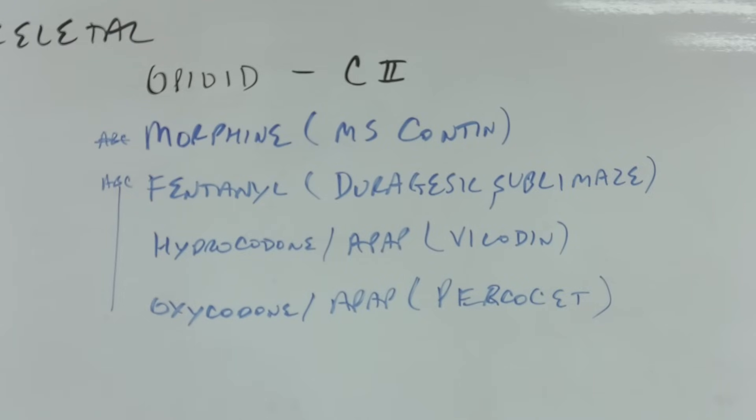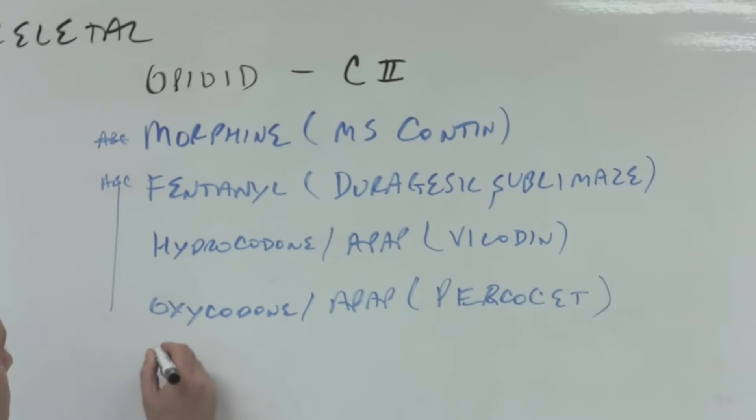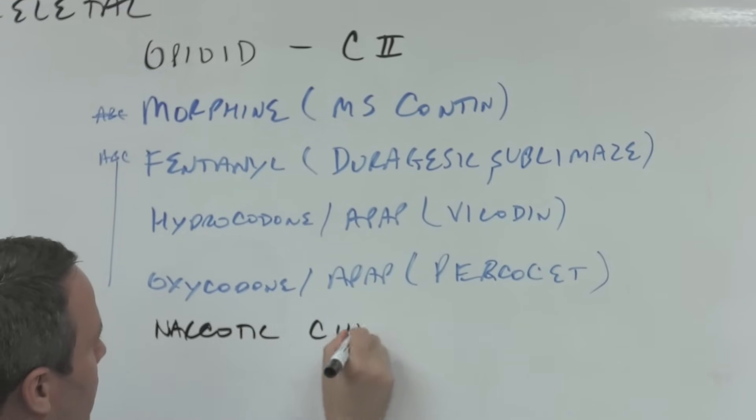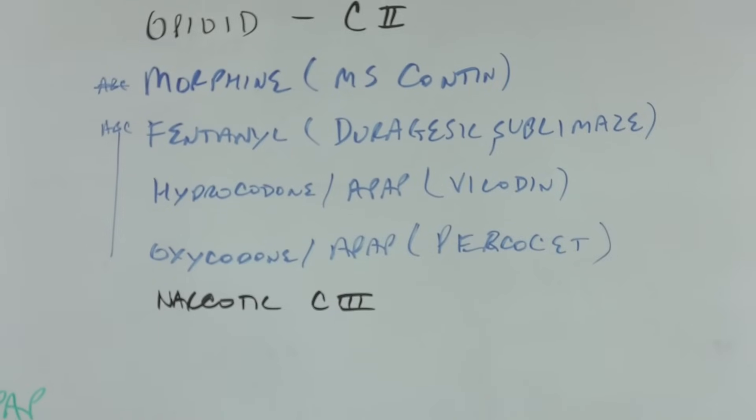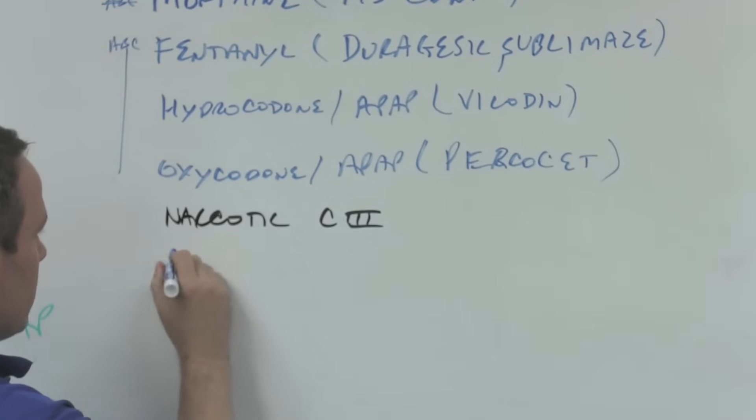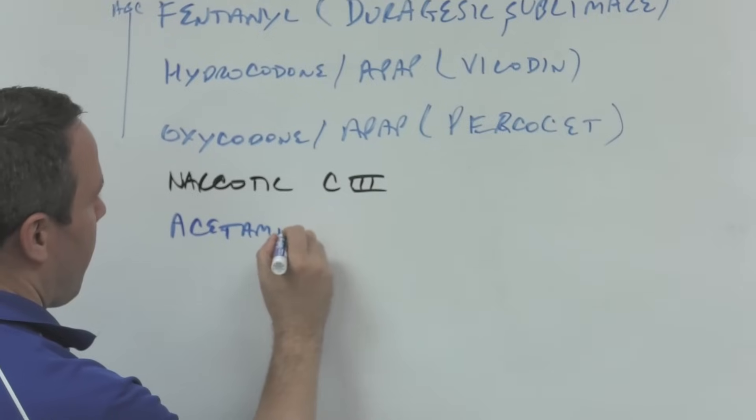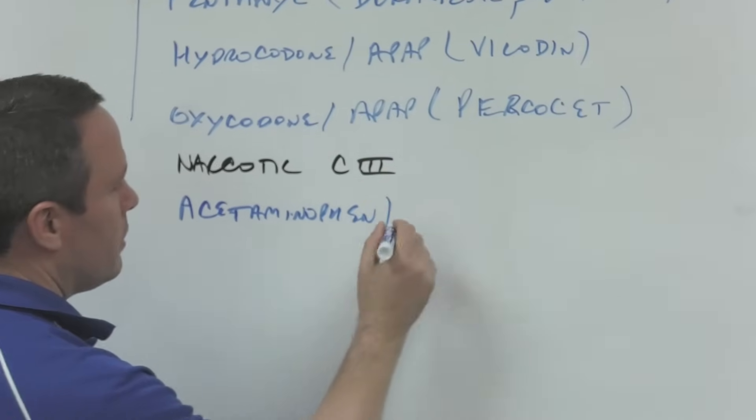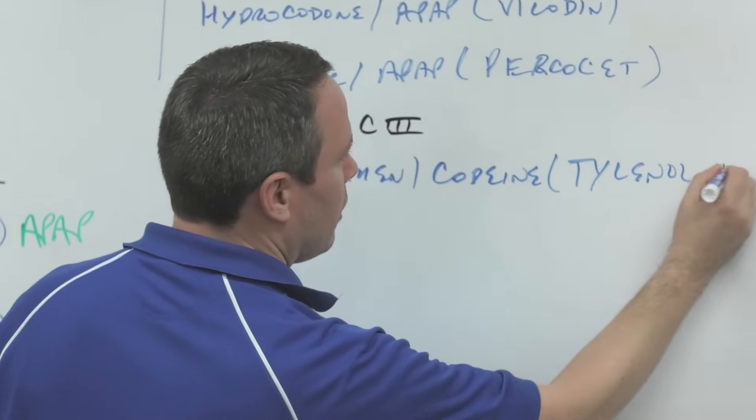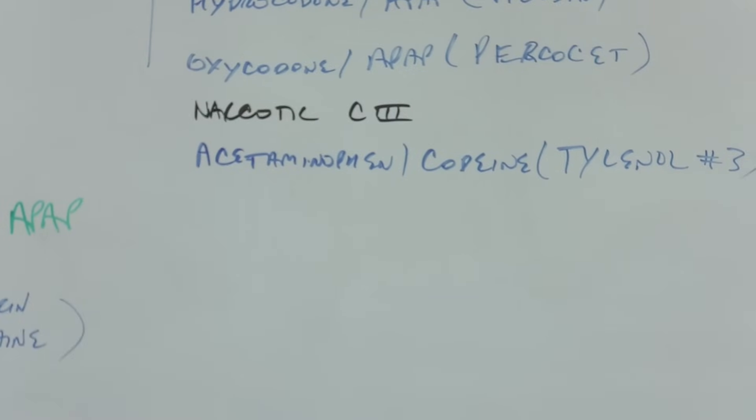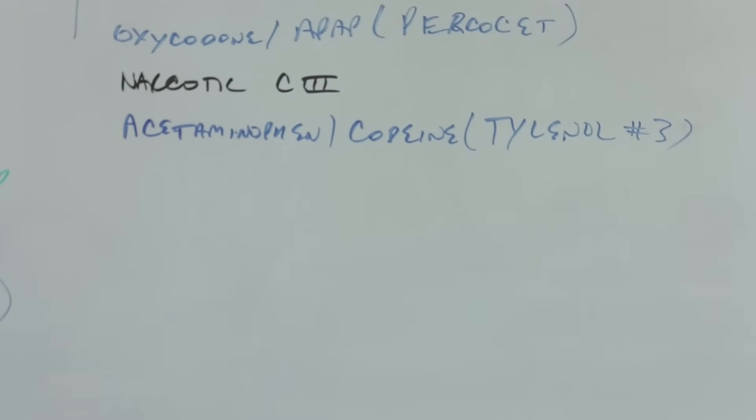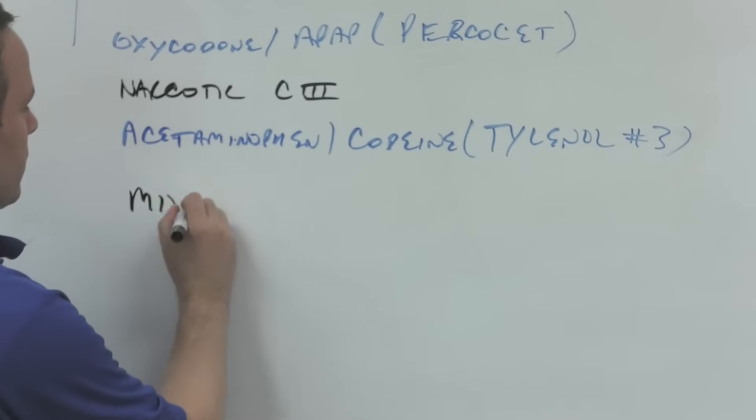But now we're going to go in DEA order from C2 to narcotic C3. And the C3 is going to be Tylenol with codeine, but we call it acetaminophen with codeine, and one of them is Tylenol Number 3. And then we have a narcotic C4; it's a mixed opioid, so I'll just call it a mixed opioid, but it is Schedule 4.